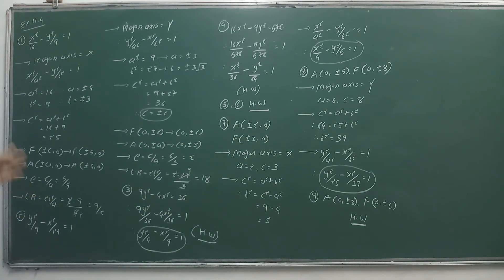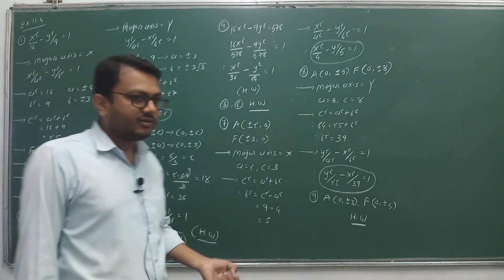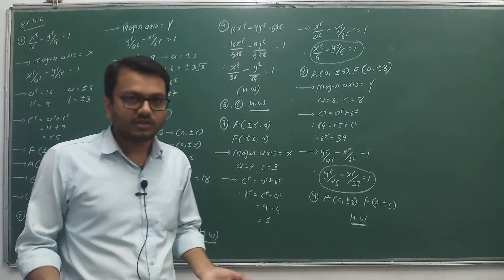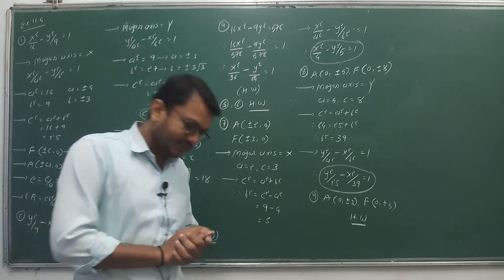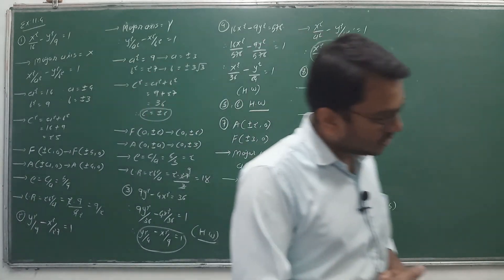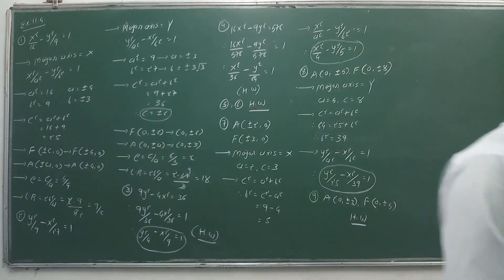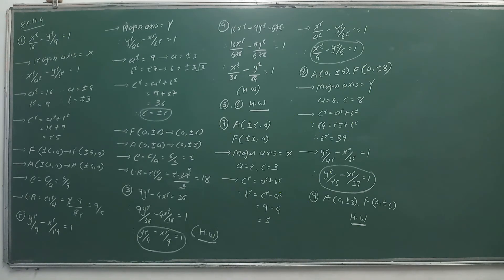To summarize today: numbers 1 to 6 — equation is given, find foci and vertices. Numbers 7 onwards — vertices, foci, major/minor axis are given, find the equation. No major complications. The whole chapter is easy. Complete your calculations and homework up to here. We will proceed further in the next video. Thank you.